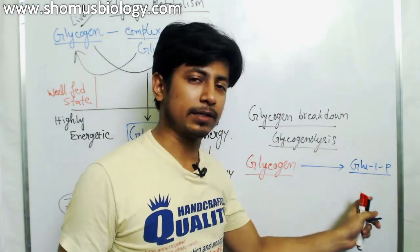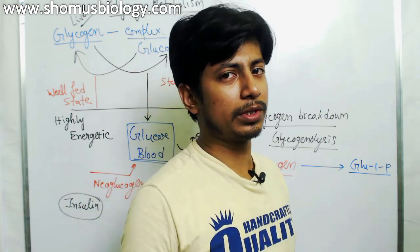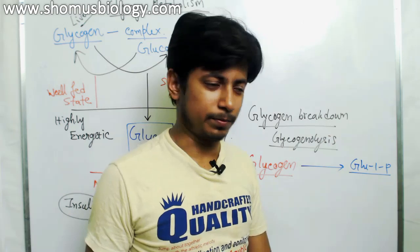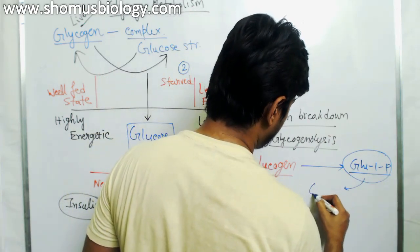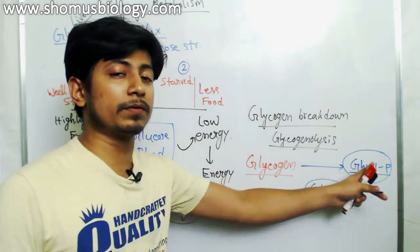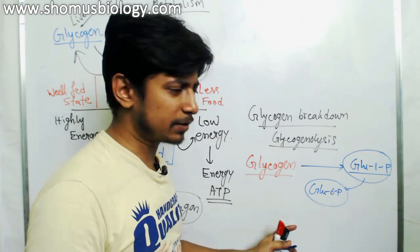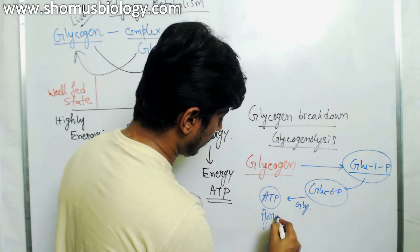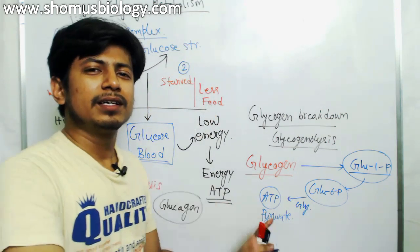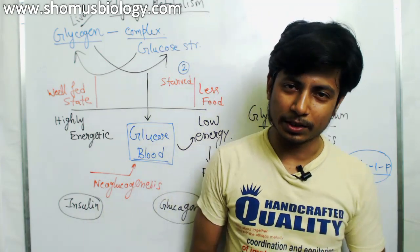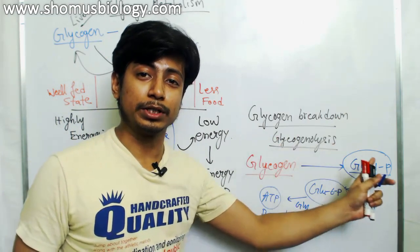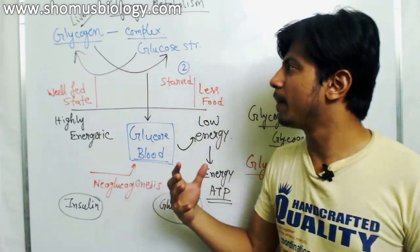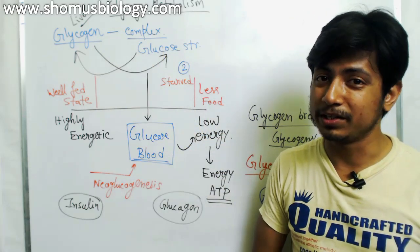The end product of glycogenolysis is not free glucose — you get glucose-1-phosphate, which is a slightly altered glucose molecule. This intermediate can be converted to glucose-6-phosphate, which is an intermediate of the glycolysis pathway. It can proceed through glycolysis to produce ATP and pyruvate, and pyruvate can enter the Krebs cycle and electron transport chain for aerobic respiration to produce energy. There should also be a signal that tells the cell when glycogen should be broken down.